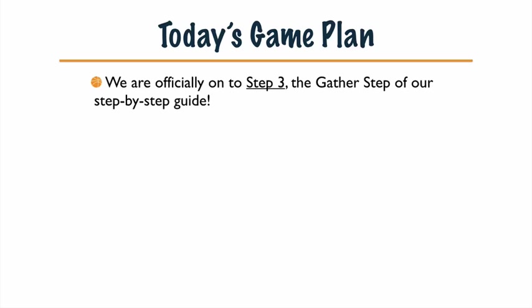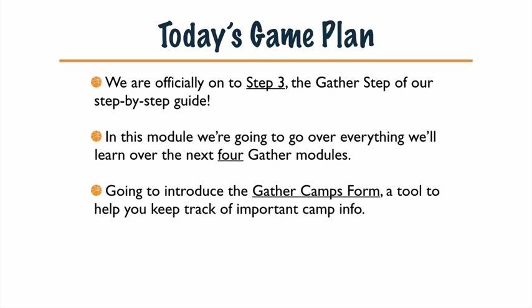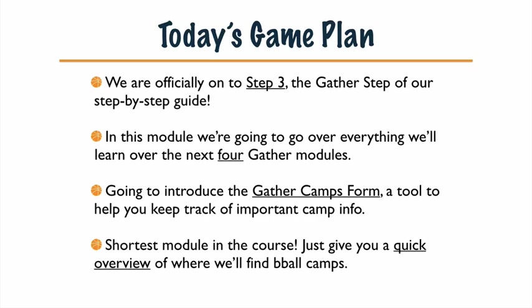Today's game plan — very excited. We're going to go over everything really quick. We are officially on to Step 3, the Gather Step of our step-by-step guide. In this module, we're going over everything we'll need to learn over the next four modules. Don't worry, we're not packing it all into one — we got it separated because it's a lot of material. We're going to show you a lot of different things. In this module, we will show you the Gather Camps form, a tool I created to help you track the important info of camp. It's the shortest module in the course, and we're going to do it really quick.